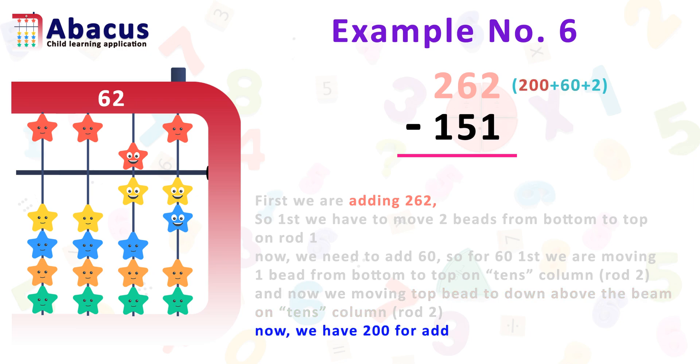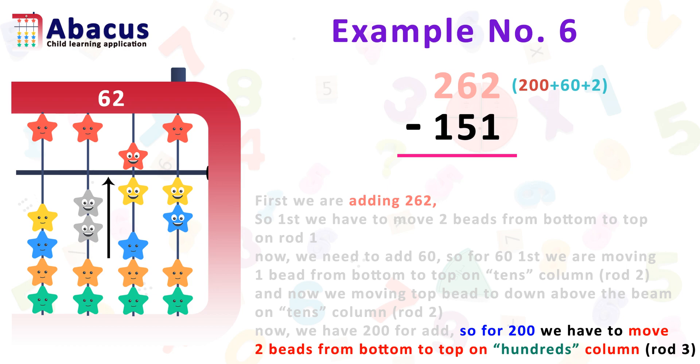Now, we have remained to add 200. So, for 200, we have to move 2 beads from bottom to top on hundredths column below the beam. And rod 3 is known as hundredths column.